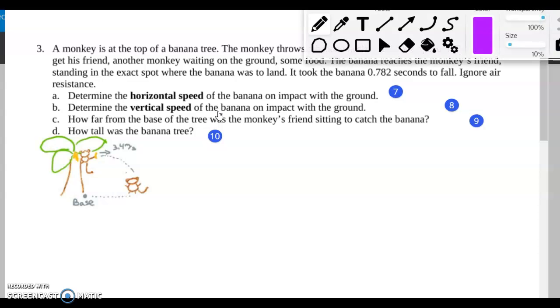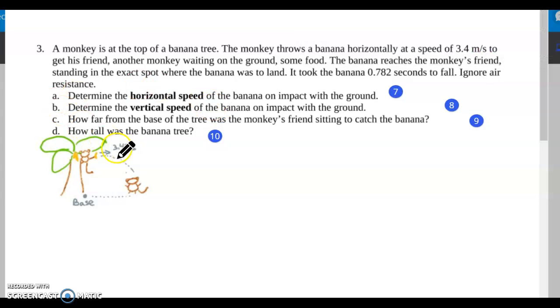Like for this problem with a monkey throwing a banana to their buddy sitting down here. That monkey throws this banana at 3.4 meters per second to his friend, another monkey waiting on the ground for some food. The banana reaches the monkey's friend standing in the exact spot where the banana was to land.